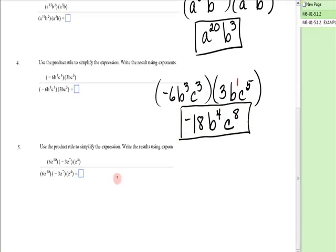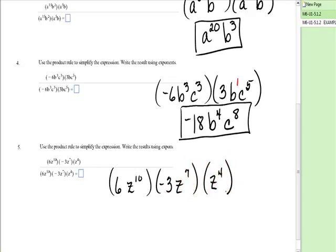One more: 6z¹⁰ times -3z⁷ times z⁴. Numerical coefficients: 6 times -3 is -18. For z: 10 plus 7 is 17, plus 4 is 21. The answer is -18z²¹.